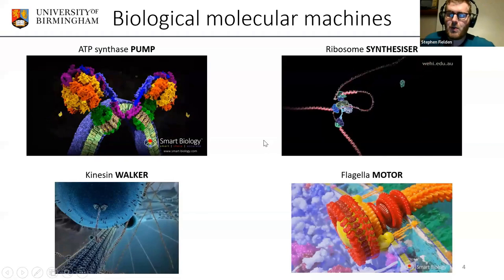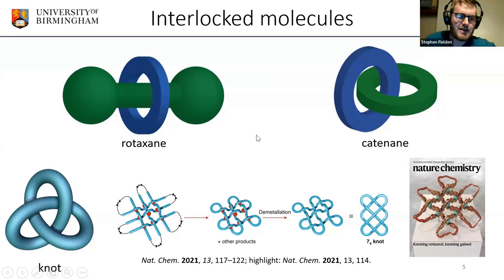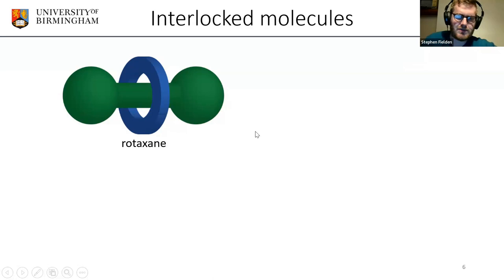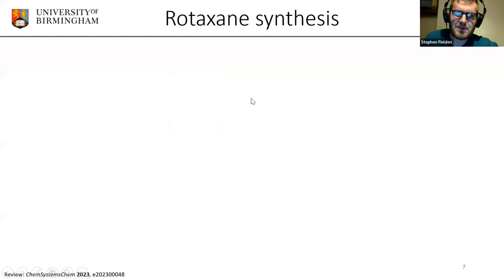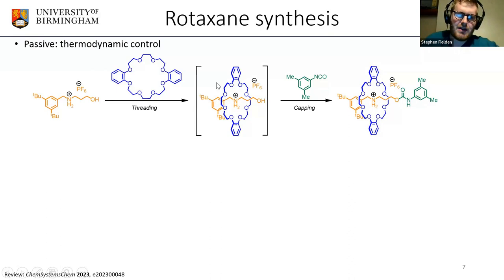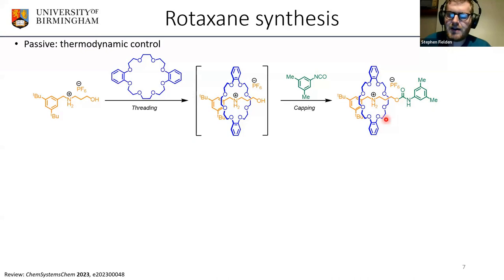The way we studied molecular machines in Dave's group was using interlocked molecules. A rotaxane has a dumbbell-type structure with a macrocycle that encircles the dumbbell. You can control the position of the ring along the thread or whether the ring is on the thread at all. Traditionally, rotaxanes are made under thermodynamic control, where a strong binding interaction between the ring and part of the thread forms a thermodynamically favorable intermediate, which is then capped off to isolate the rotaxane.